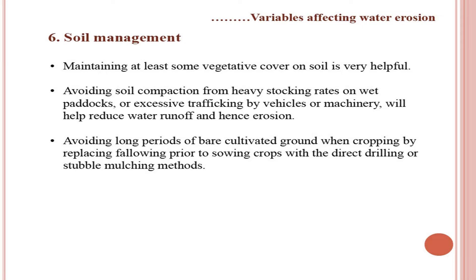Soil management is the most important variable. Maintaining at least some vegetative cover on soil is essential — one should not keep soil bare. Avoiding soil compaction from heavy stocking rates on wet paddocks or excessive machinery traffic will help reduce water runoff and erosion. Avoiding long periods of bare cultivated ground when cropping — by replacing fallowing with direct drilling or stubble mulching methods — also protects the soil.